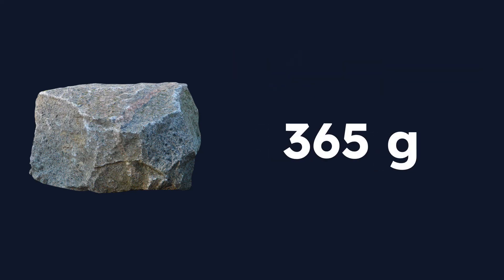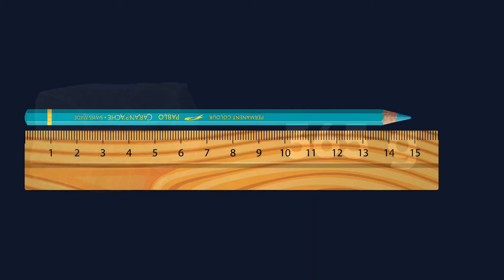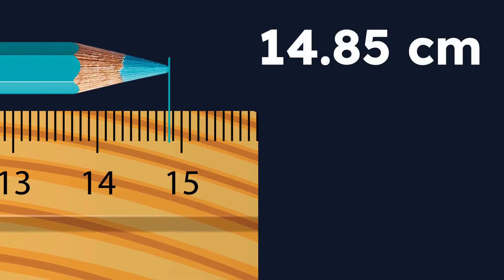That's a quick review of simple rounding for masses. Let's look at one more quick example — this time using length. I have a ruler with a colored pencil and we're going to measure how long it is. Zooming in, we can see that the very tip of the colored pencil is in between 14 and 15 centimeters, specifically between the eighth and ninth line separating 14 and 15. Those are millimeters, also known as tenths of a centimeter. So this measurement is 14.85 centimeters.